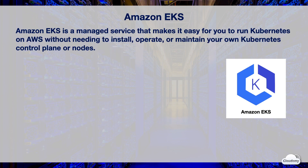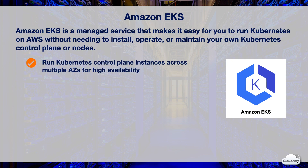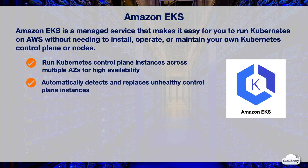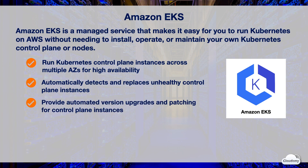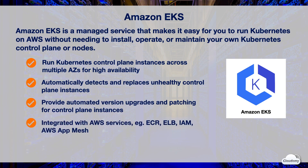Amazon EKS is a managed service that makes it easy to run Kubernetes on AWS, without needing to install, operate, or maintain your own Kubernetes control plane or nodes. EKS is highly available, running control plane instances across multiple availability zones, and is fault-tolerant — it can automatically detect and replace unhealthy instances. EKS provides automated version upgrades and patching, and is integrated with AWS services such as ECR, Elastic Load Balancing, AWS IAM, and AWS App Mesh. EKS is compatible with native Kubernetes, so you can migrate standard Kubernetes applications without refactoring your code.